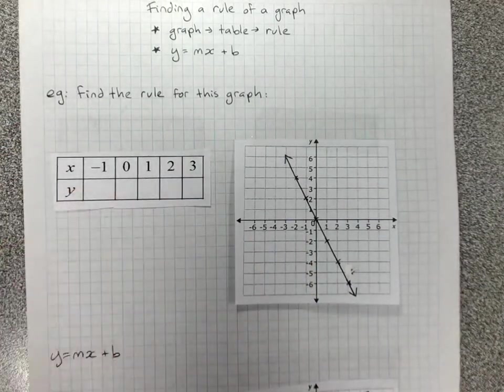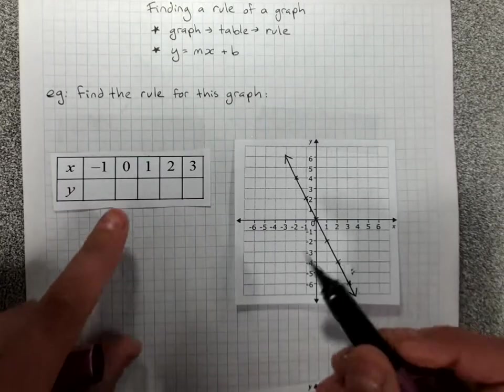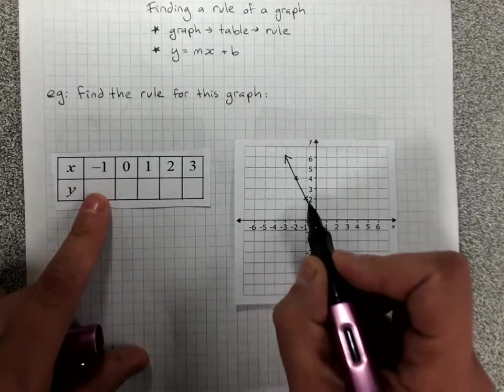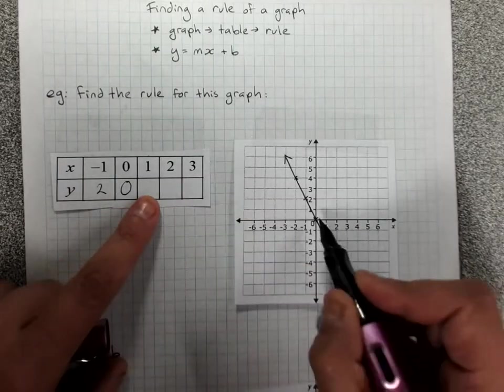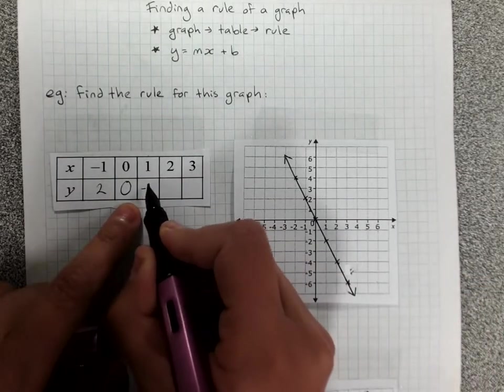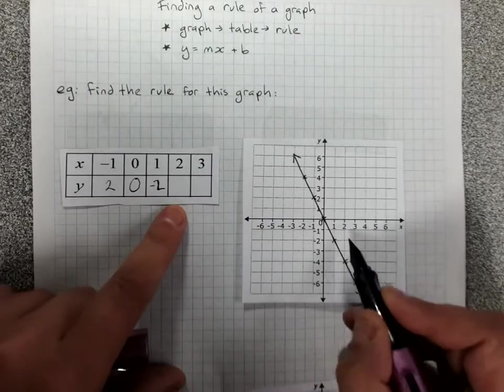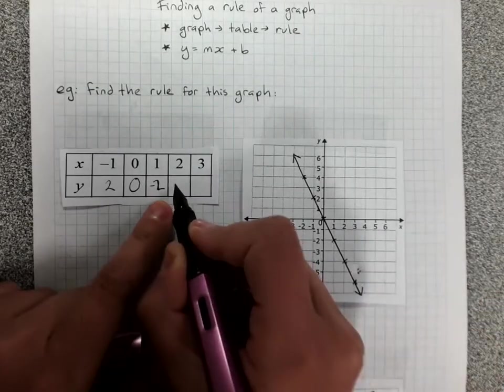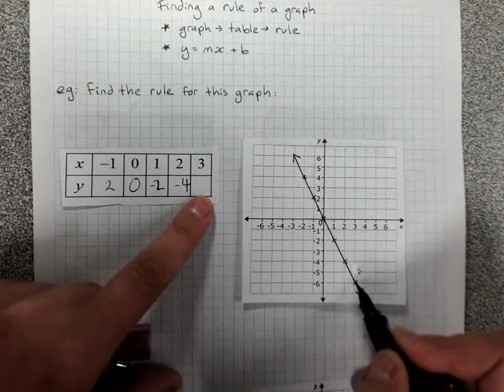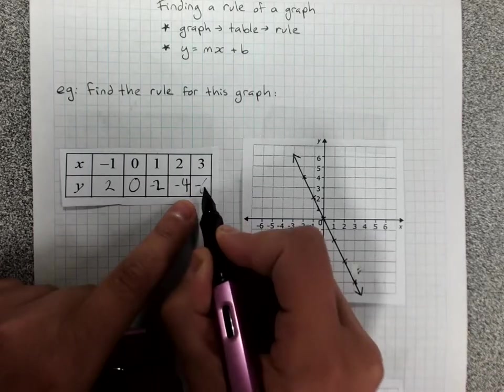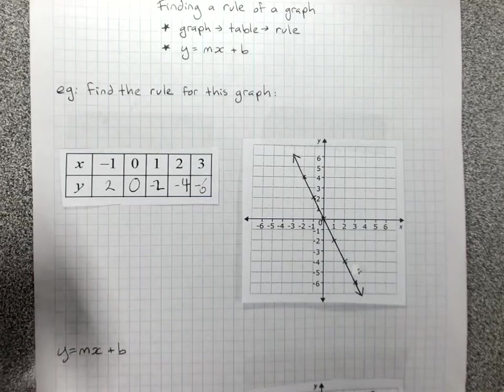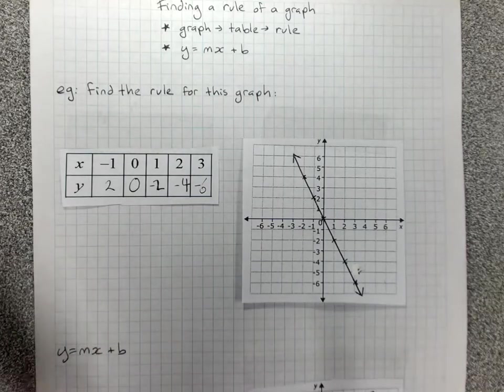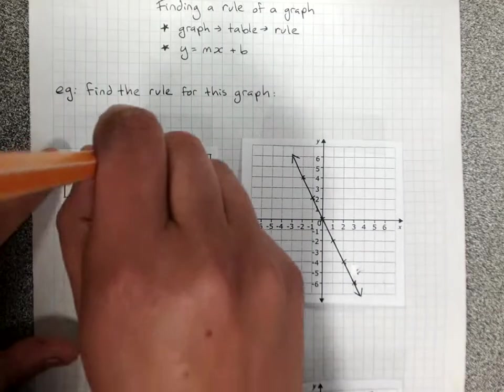We put in our coordinates based on these points. So when x is negative 1, y is 2. When x is 0, y is 0. When x is 2, y is negative 4. When x is 3, y is negative 6. And this uses the pattern that we've been spotting so many times.